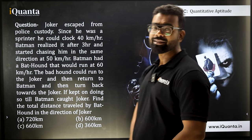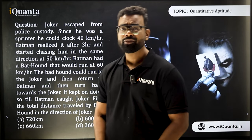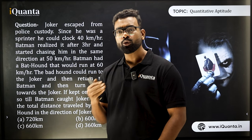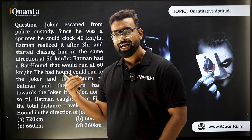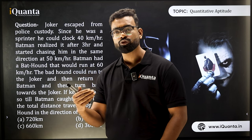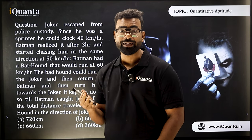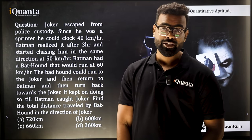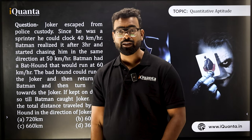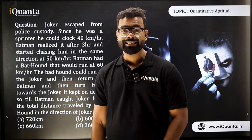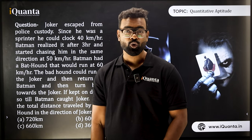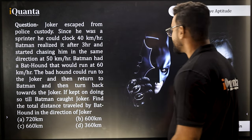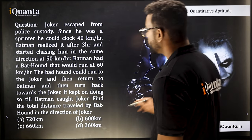This is similar to a previous question, but the difference is that in the previous case one object was fixed. Here, both are moving — the thief is moving and Batman is also moving. That is the key difference between these two cases. Now you need to understand how to solve this type of question.